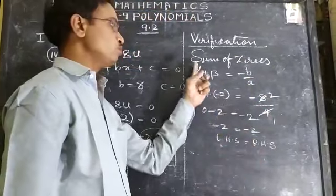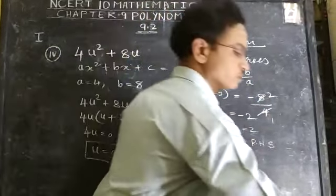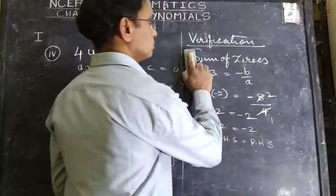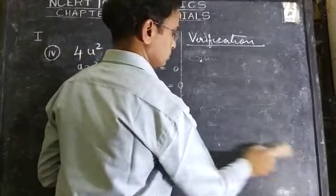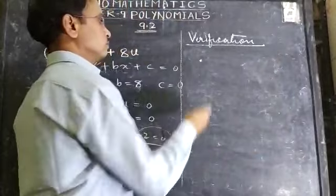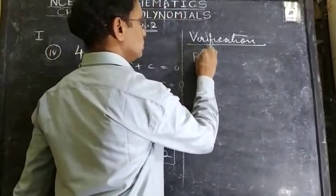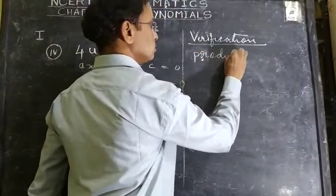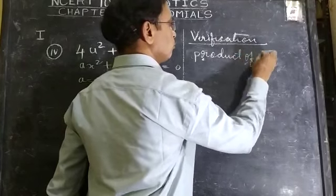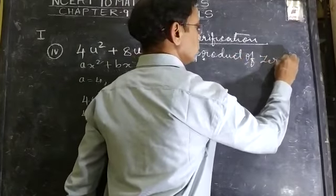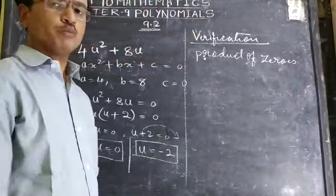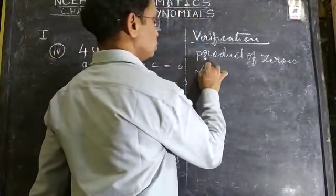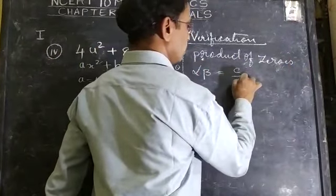We will go to product of zeros. Next point: product of zeros. You know that product of zeros, α × β = c/a.